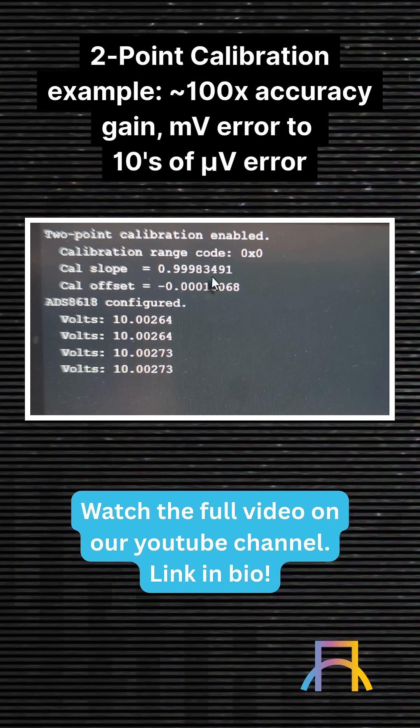We can see the slope is less than 1. So that must mean the error slope is greater than 1. Our correction factor is pulling it less than 1 to make it 1. And then our offset error is actually positive, so our correction factor is negative.